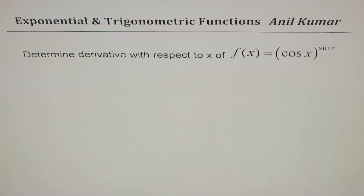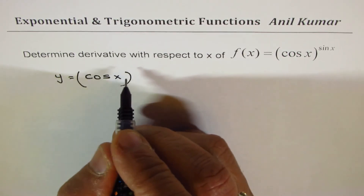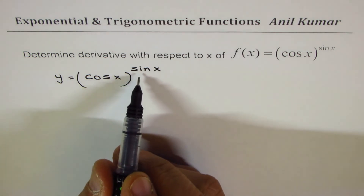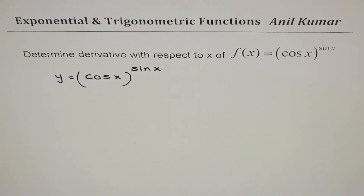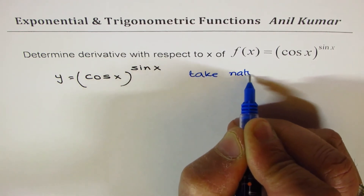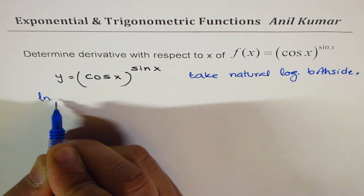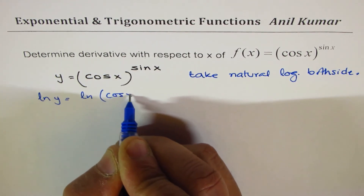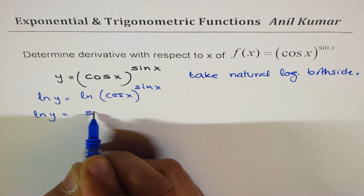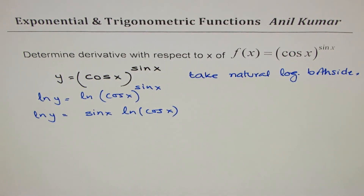The last question is y = cos(x)^(sin(x)). This is a very different type of question because the exponent is a trigonometric function. In such cases, we take the natural log of both sides. So ln(y) = ln(cos(x)^(sin(x))), which gives us ln(y) = sin(x) · ln(cos(x)). This makes it simpler to find the derivative.